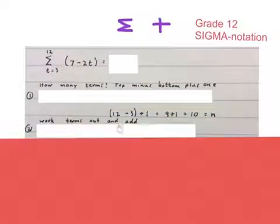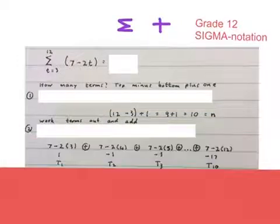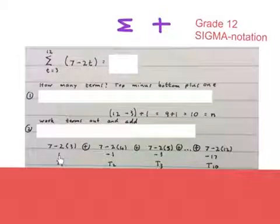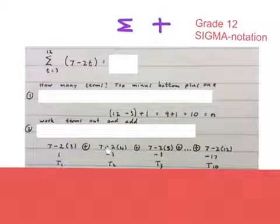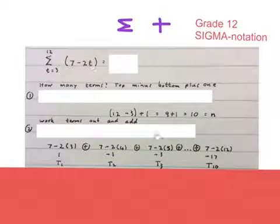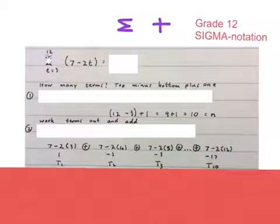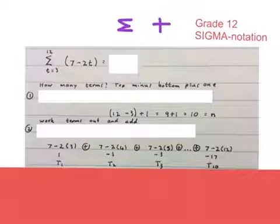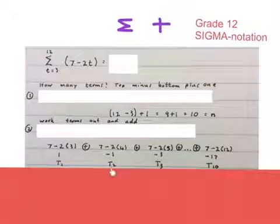Next we work the terms out. We take the bottom number, which is 3, substitute it in and get the answer, which is 1. Take the next number, which is 4, plug it in and get minus 1. Take 5, plug it in and get minus 3. We go all the way up to 12, plug 12 in and get minus 17. So term 1 is 1, term 2 is minus 1, and term 3 is minus 3.